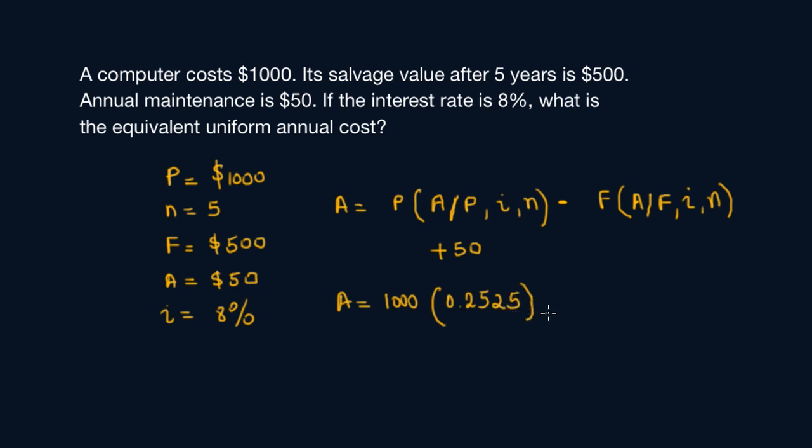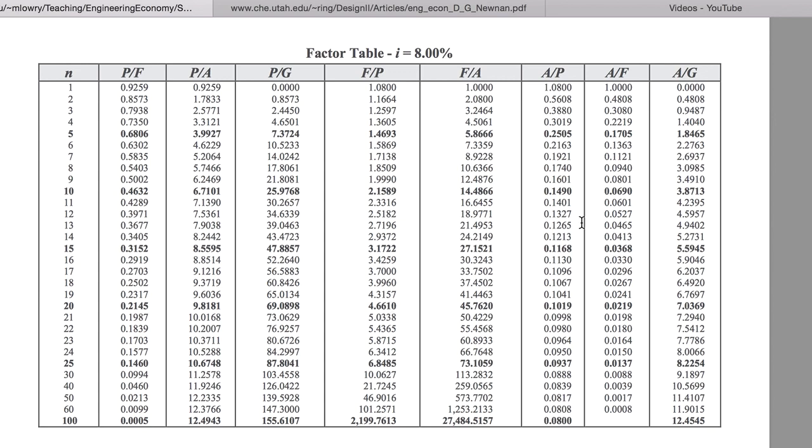We're subtracting the salvage value. Most of the time salvage value is negative because it's a depreciating value. 500, going back to the factor table to find A/F—A given F, 8%, five years—that's 0.1705.